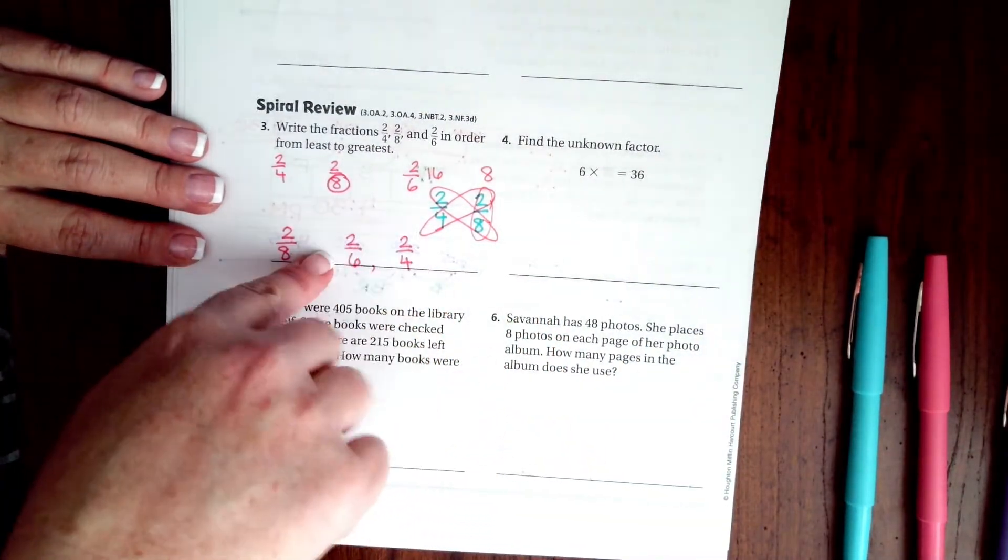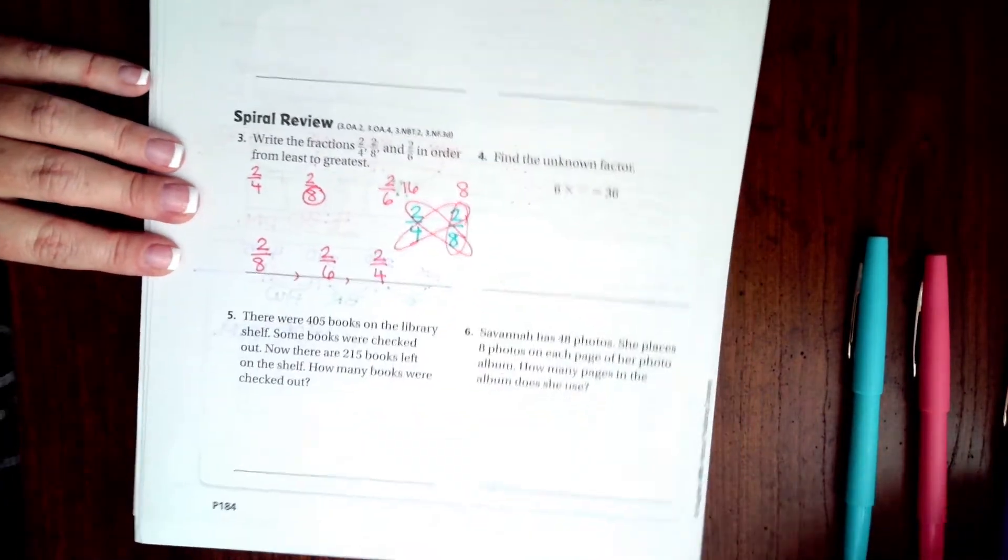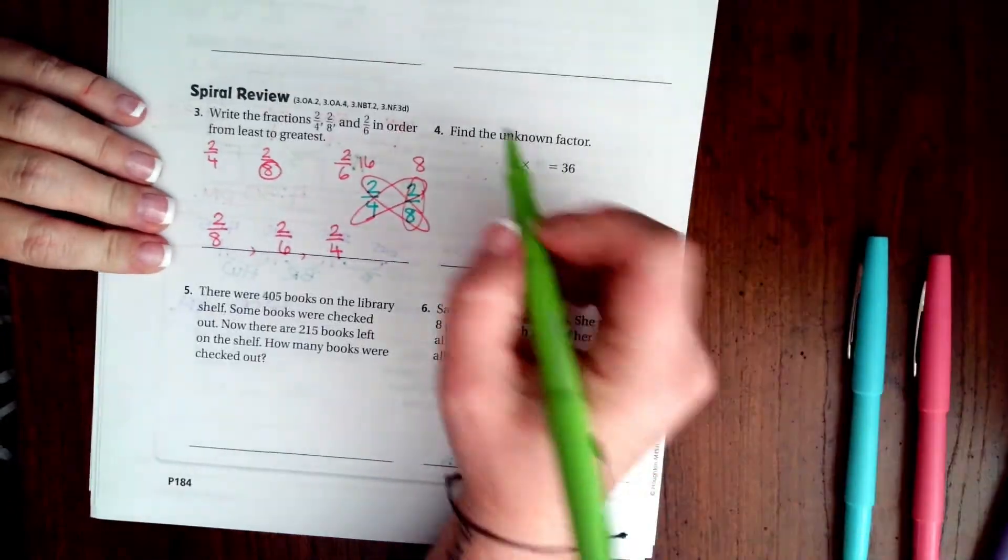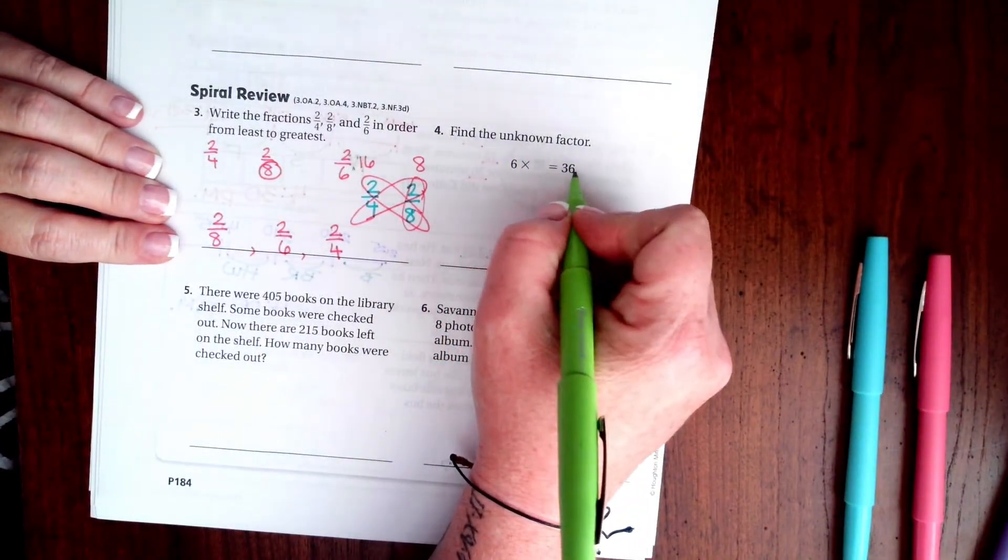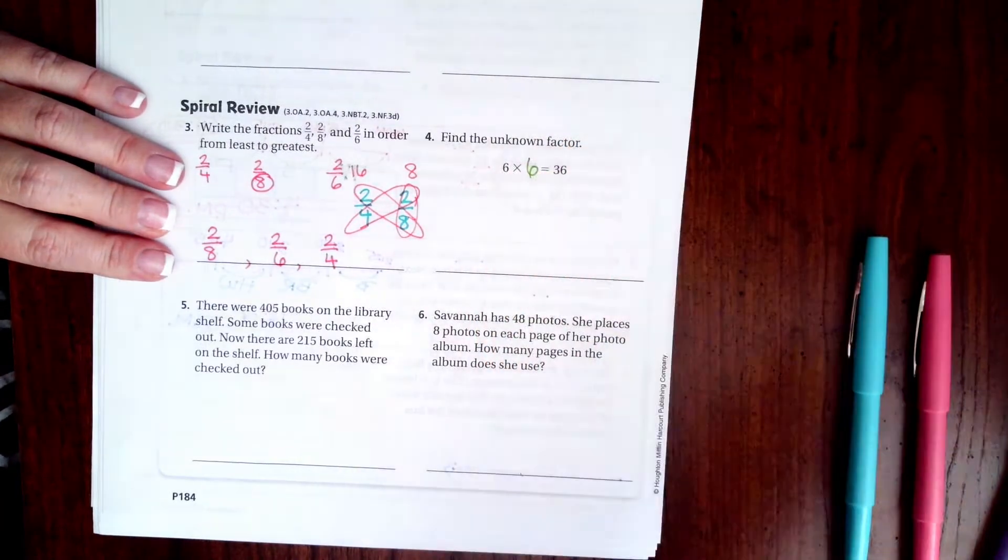We're going to stick to this little trick. Find the unknown factor: 6 times what is 36? Well, 6 times 6 is 36.